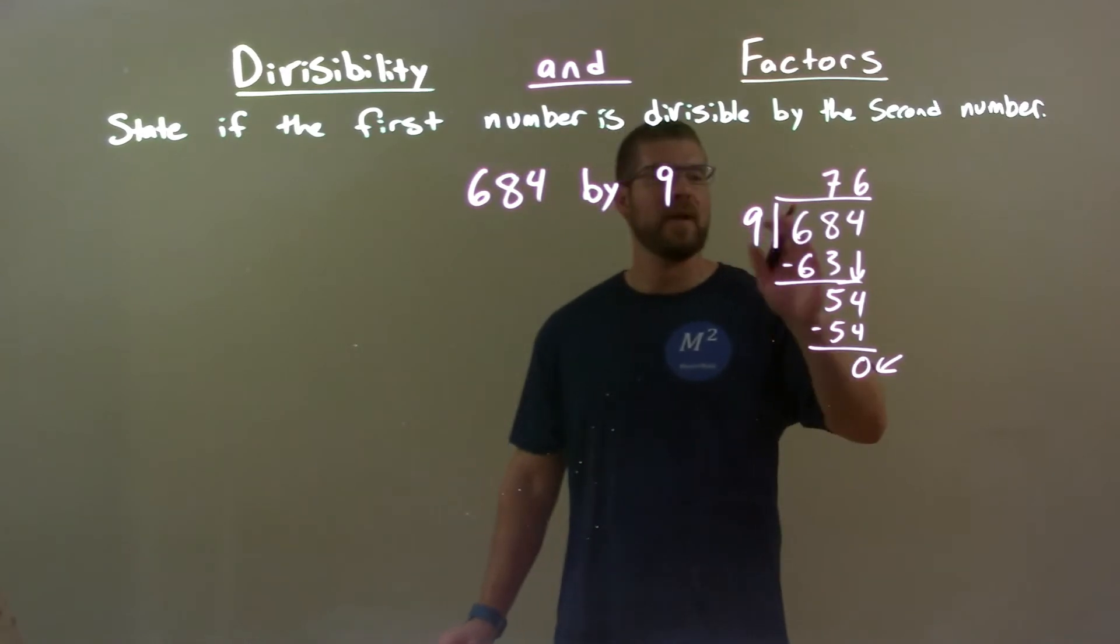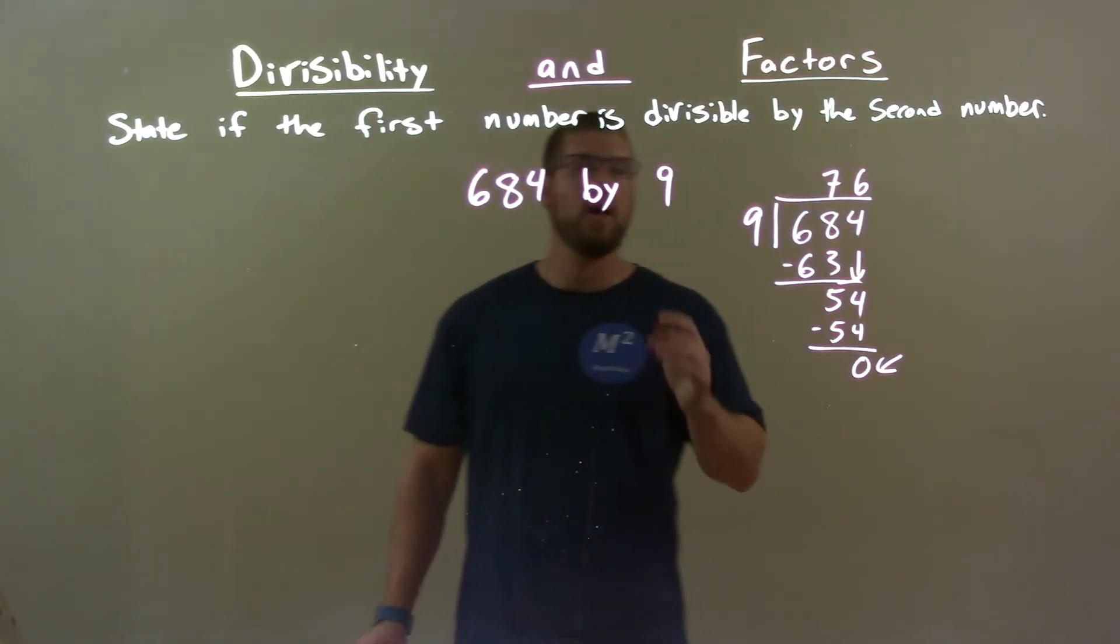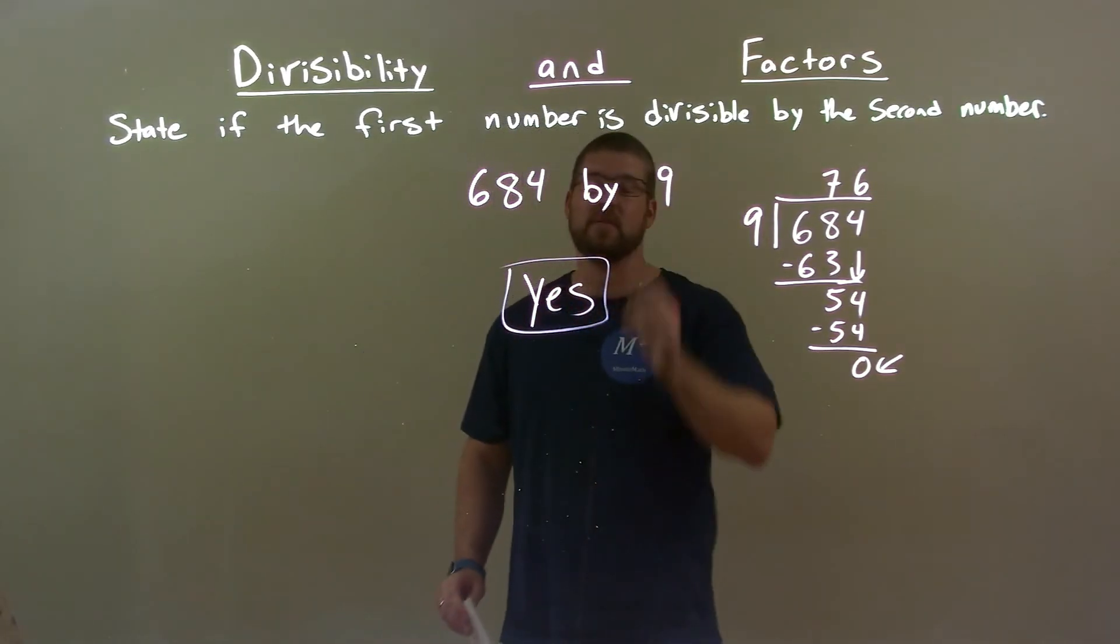That means 9 went into 684 evenly, 76 times. So our final answer is yes. 684 is divisible by 9.